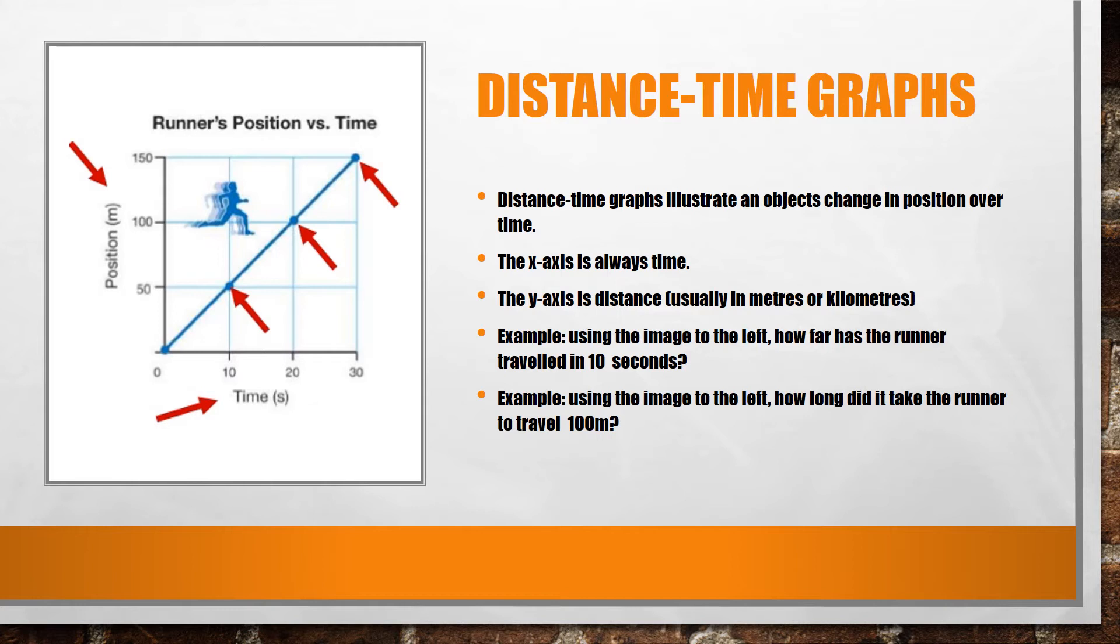We can also use the graph to discover how long it takes the runner to travel a certain distance. In this case, how long did it take the runner to travel 100 meters? We would find 100 meters along our y-axis and following across until we hit our runner's path, then down to the x-axis, where you would see that it took the runner 20 seconds to travel that 100 meters.